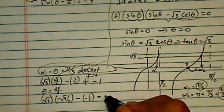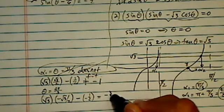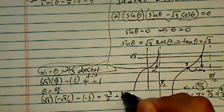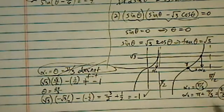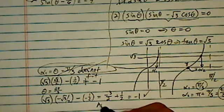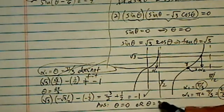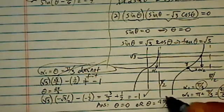So here I have -3/2 + ½, which is equal to -1. So this one fits. So my answers are θ equal to 0 or θ is equal to 4π/3.